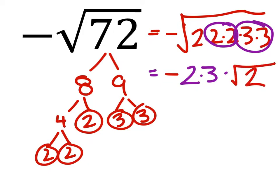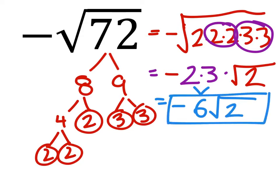And we can multiply 2 and 3, it's a negative 2 times 3 which is 6 times the square root of 2. So it's a negative 6 times the square root of 2. You can put the multiplication there if you want.